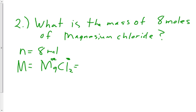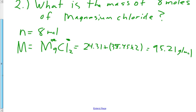So that's going to mean 24.31 plus 35.45 times 2. So we're looking at 95.21 grams per mole is our molar mass.